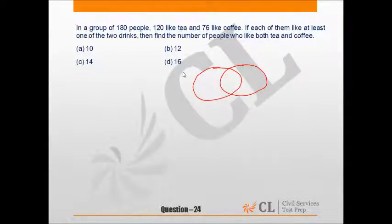Let us suppose this represents the people who like tea and this one coffee. Total number of people who like tea is 120 and total number of people who like coffee is 76, and in total there are 180 people who like either tea or coffee or both.